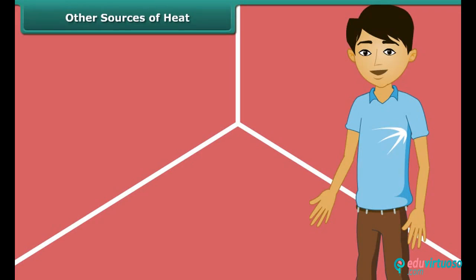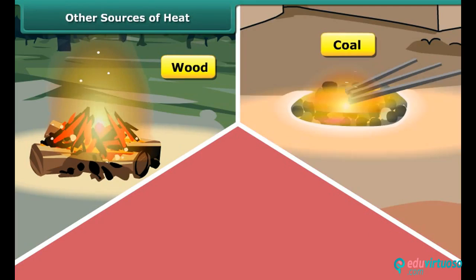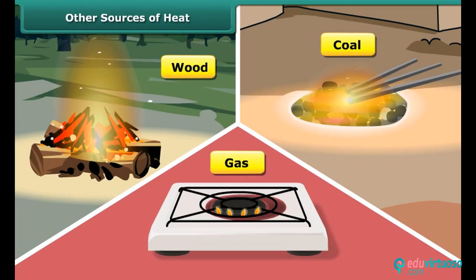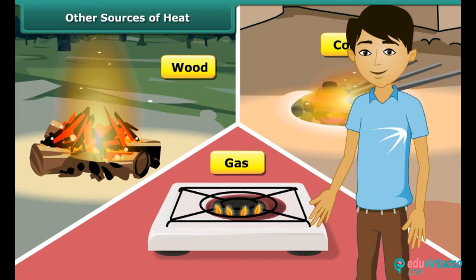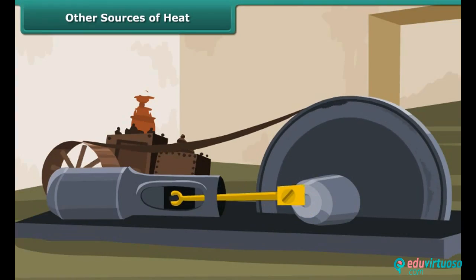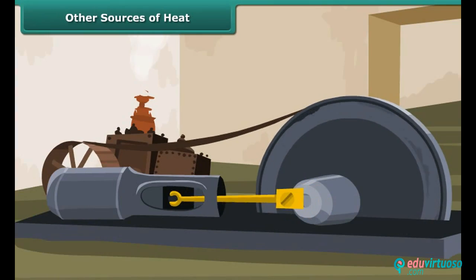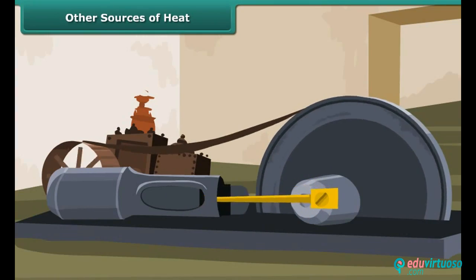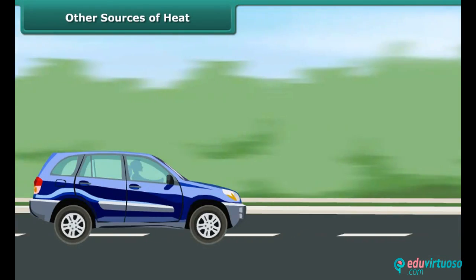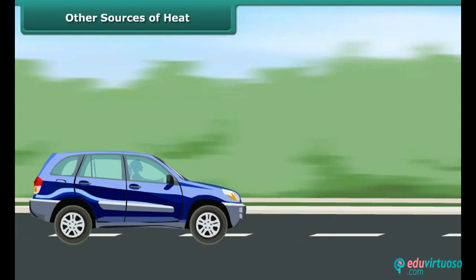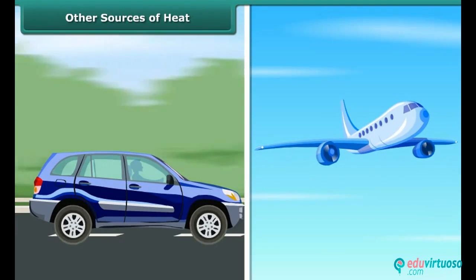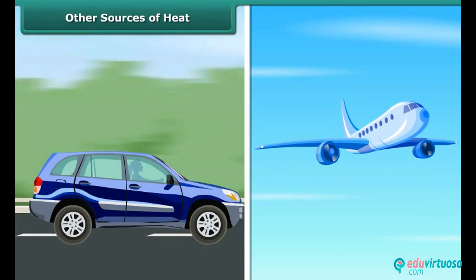Man can generate heat by burning wood, coal and gas. Wood, coal and gas are called fuels. Fuels burn in machines to make them work. A motor car runs by burning fuel; an aeroplane flies by burning fuel.